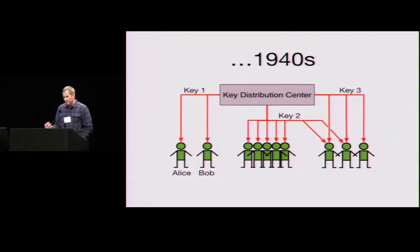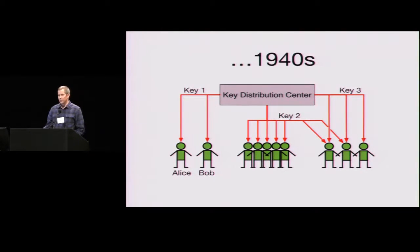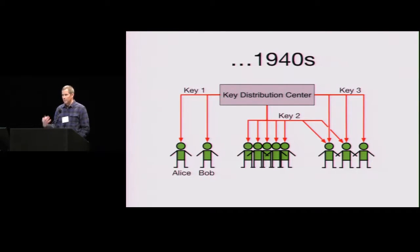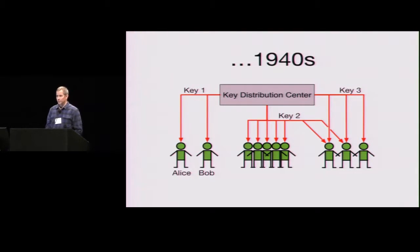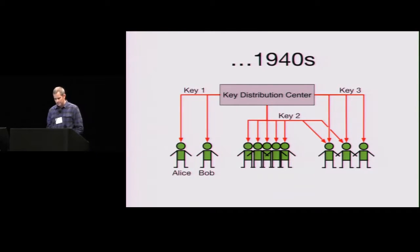The key management underlying this was simple: someone created keys and gave them to everyone. There'd be a center. If Alice and Bob wanted to talk, the center would give each of them the same key, and then they'd be able to communicate. So this was a rigid, centrally controlled system, but this is what they had.